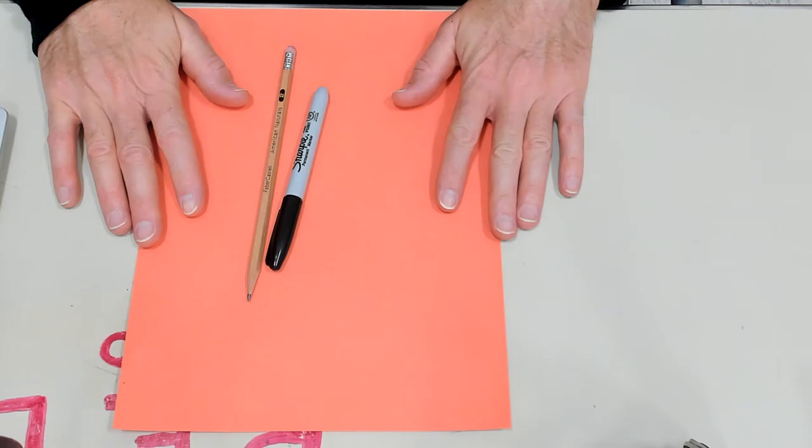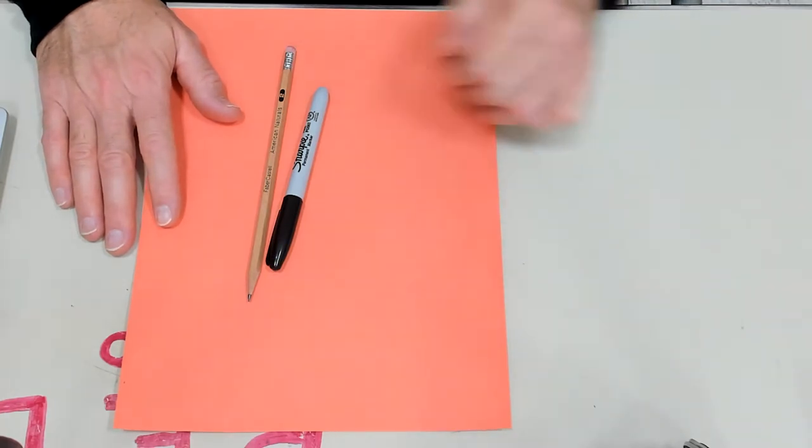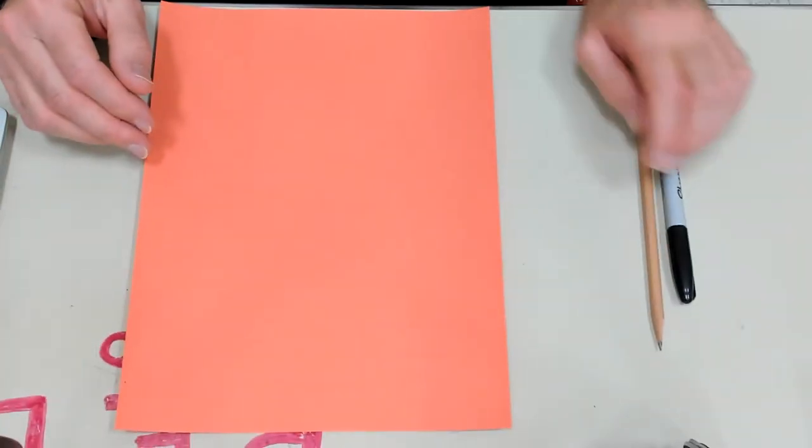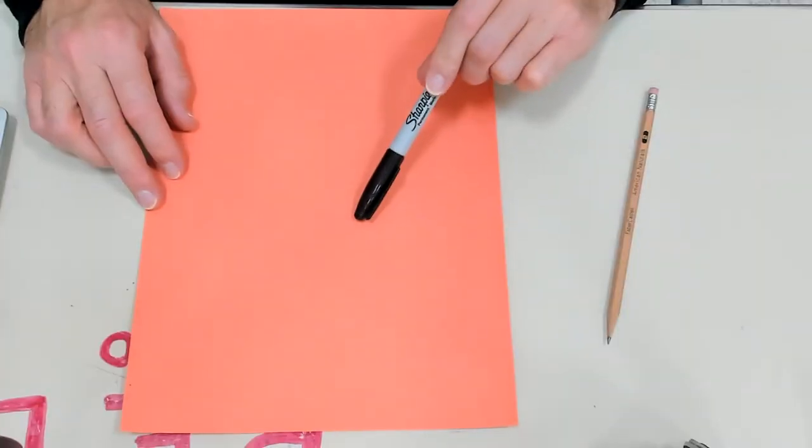not blue, not purple, something lighter—red, yellow, green—because we want to have good contrast. So we're going to be using black marker on this paper.